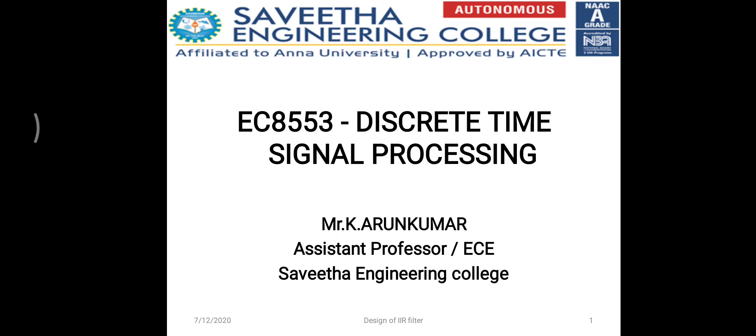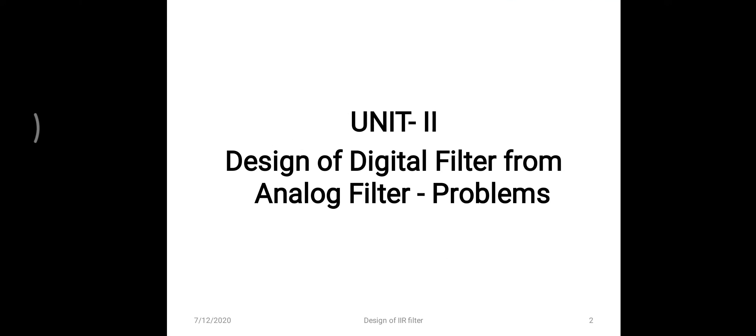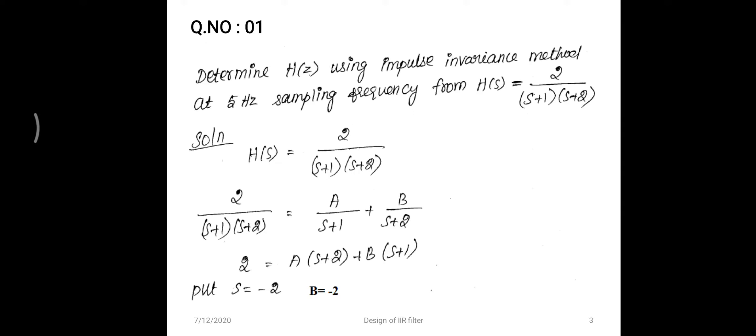Welcome to the course EC8553 Discrete Time Signal Processing. This lecture is about design of digital filters from analog filter examples. In the previous lecture we discussed how to get the digital filter transfer function from analog filter transfer function based on impulse invariance, bilinear, and approximation of derivatives. Here we are going to solve some examples for better understanding.